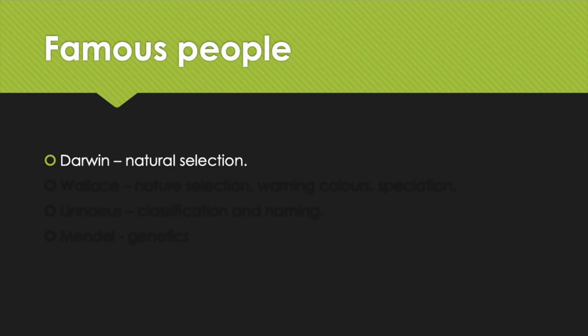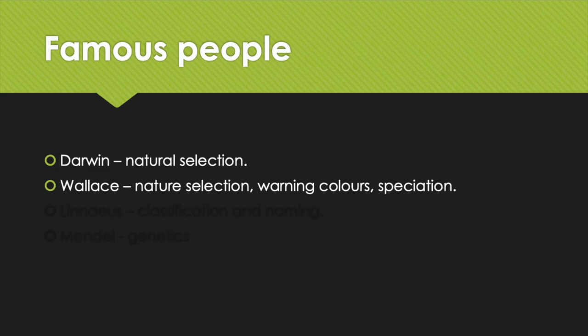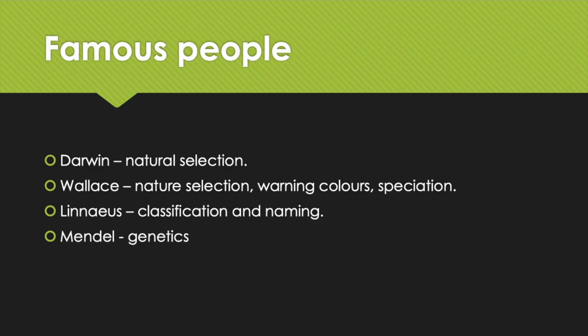Some famous people: Darwin came up with natural selection; Wallace also came up with natural selection at the same time, and is also famous for work on warning colors and speciation. Linnaeus came up with ideas about classification and naming organisms with a scientific name. Mendel came up with all the genetic stuff. Good luck.